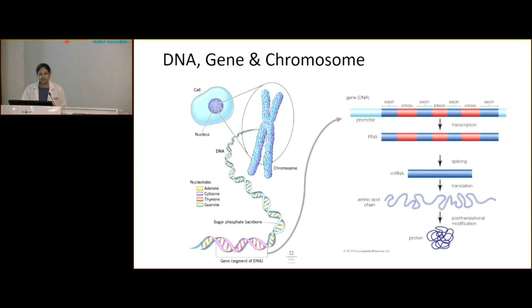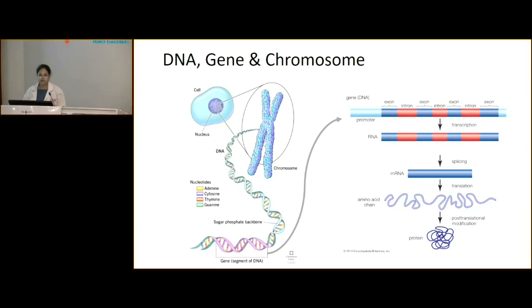The exons are the most important region of the gene that gets transcribed and translated into a functional protein. Whenever there is a change in the sequence or structure of the gene, this protein gets hampered and that manifests into the phenotype of your disease. That is why it is important to understand the sequence and structure of the gene.